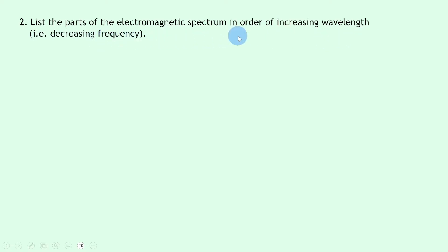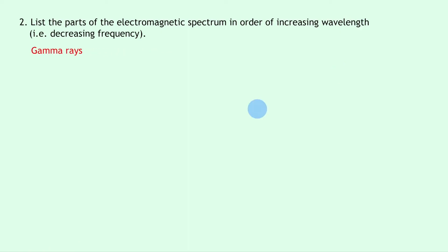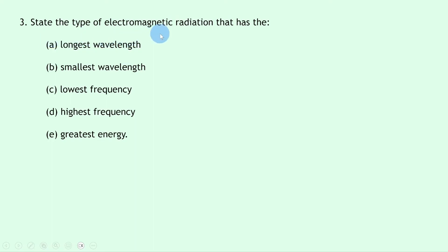Question two says: list the parts of the electromagnetic spectrum in order of increasing wavelength, i.e. decreasing frequency. If we're going in order of increasing wavelength, we need to start with the member that has the lowest wavelength, and that's gamma rays, followed by x-rays, then ultraviolet, visible light, infrared, microwaves, and then radio and TV waves.